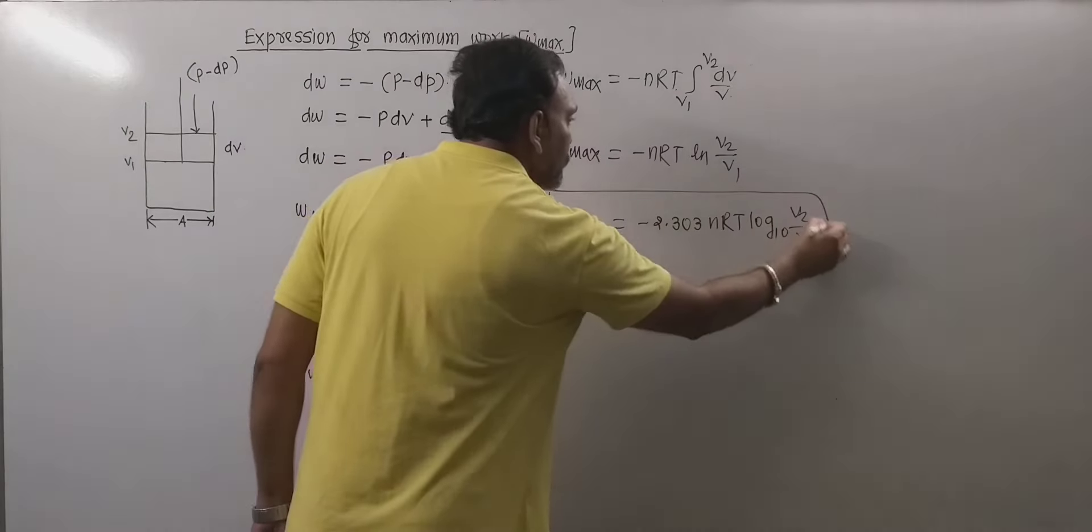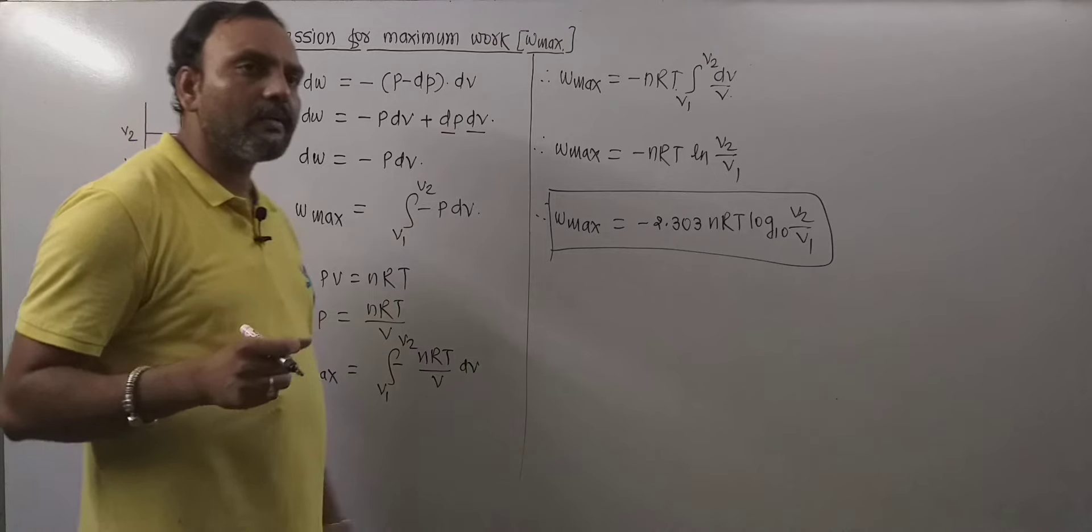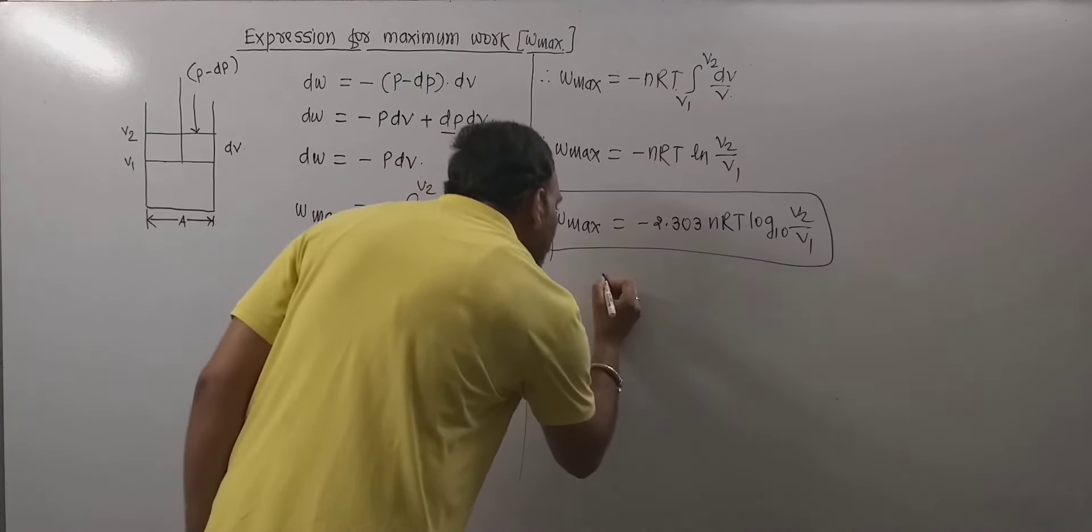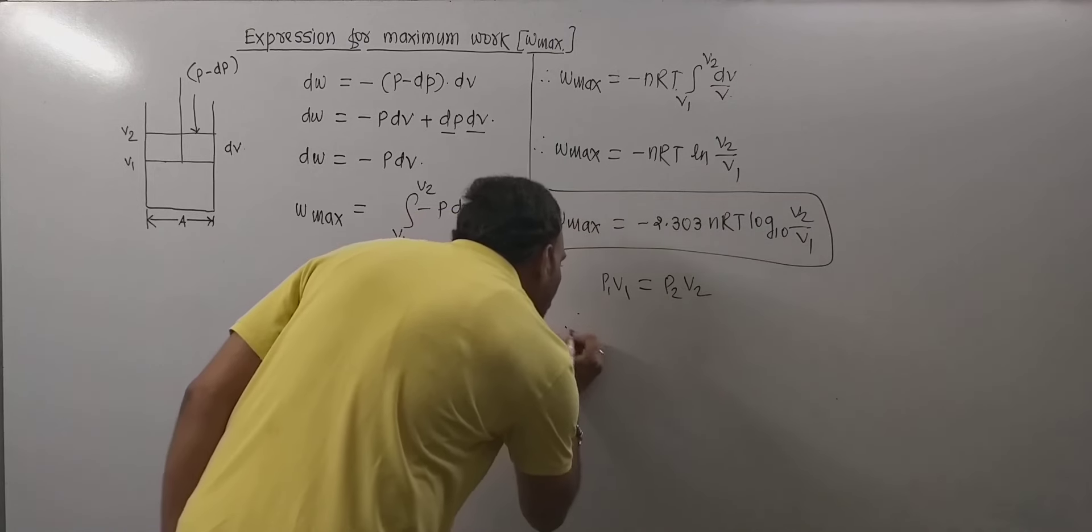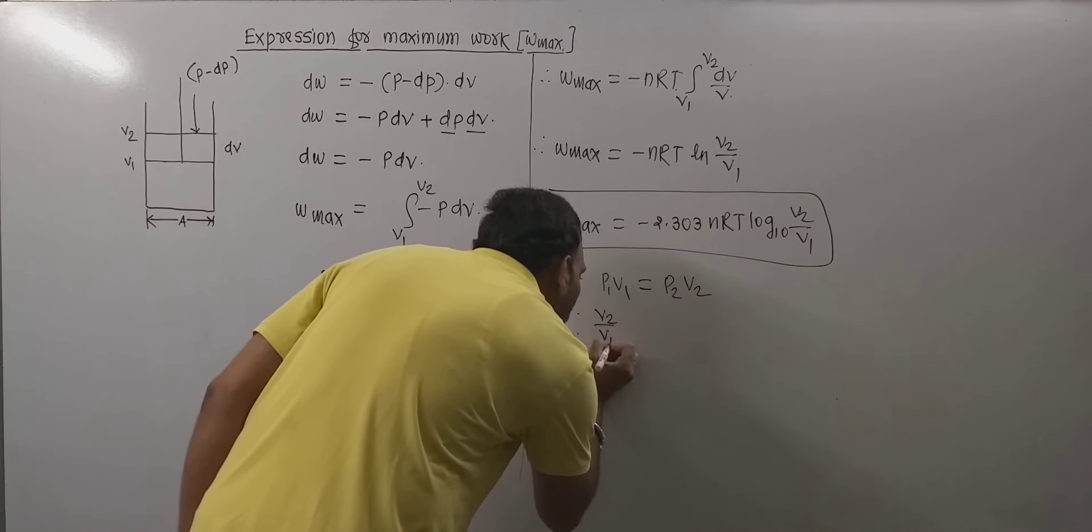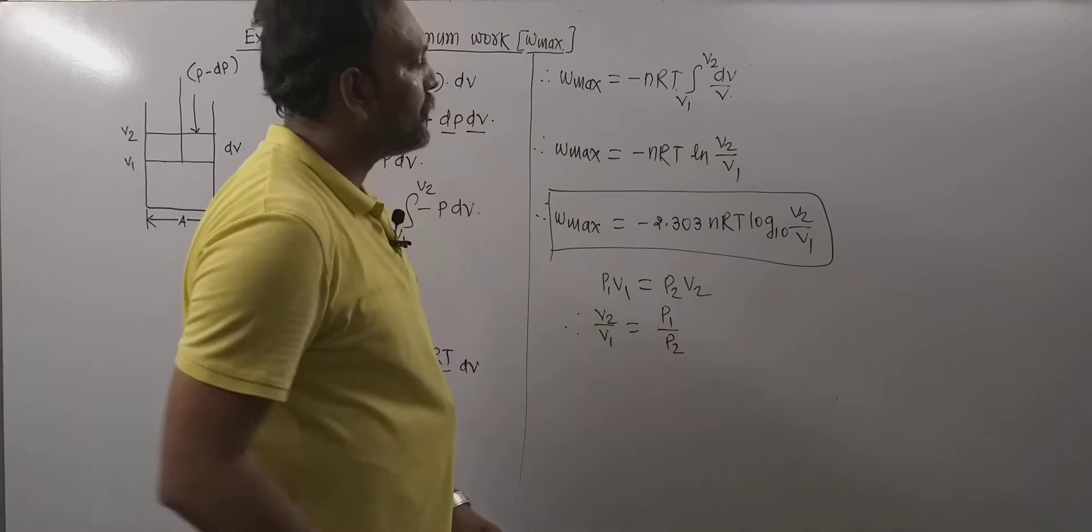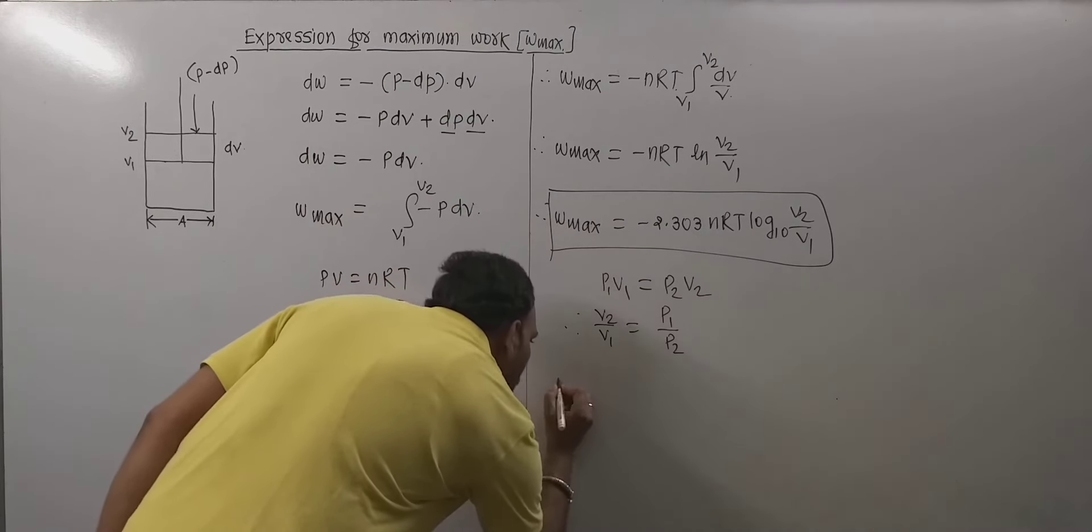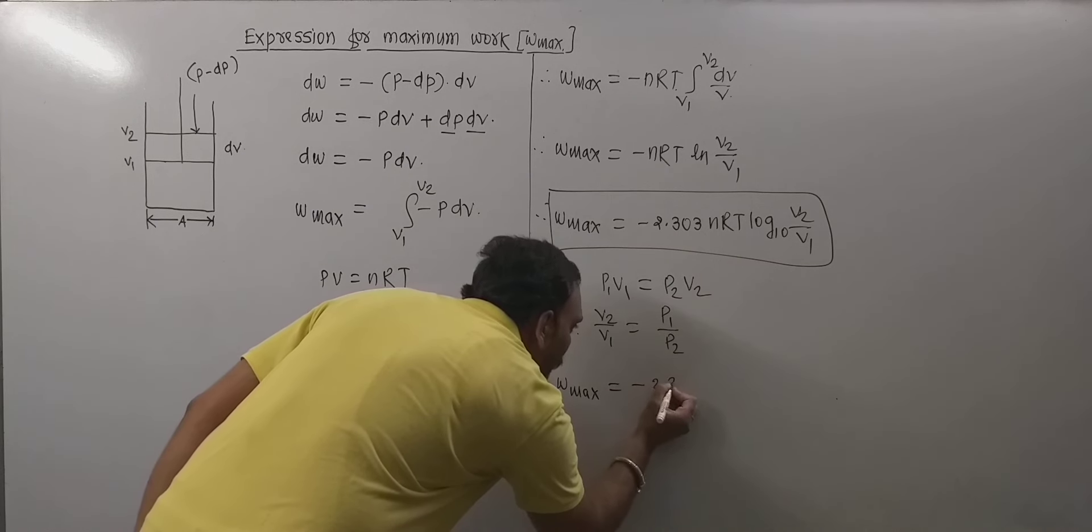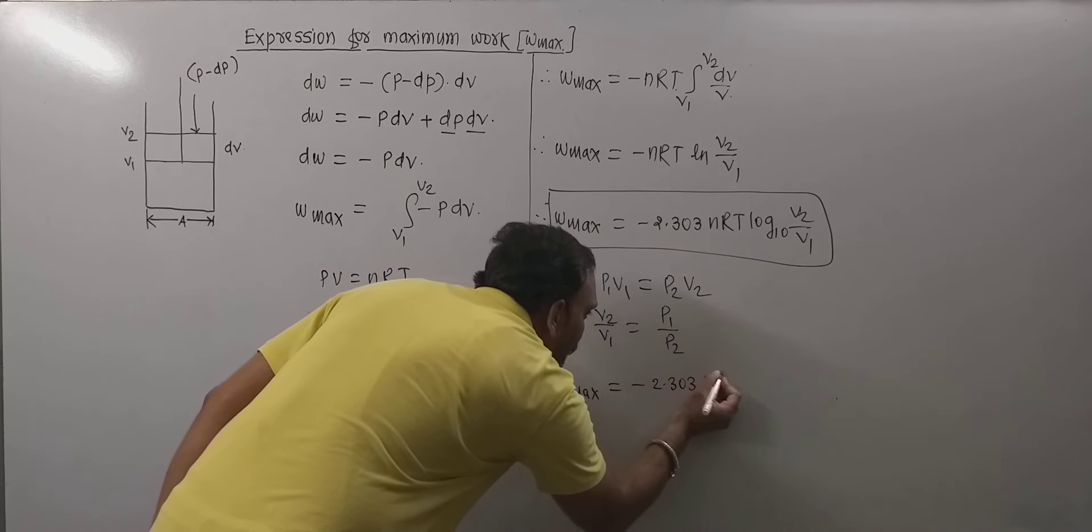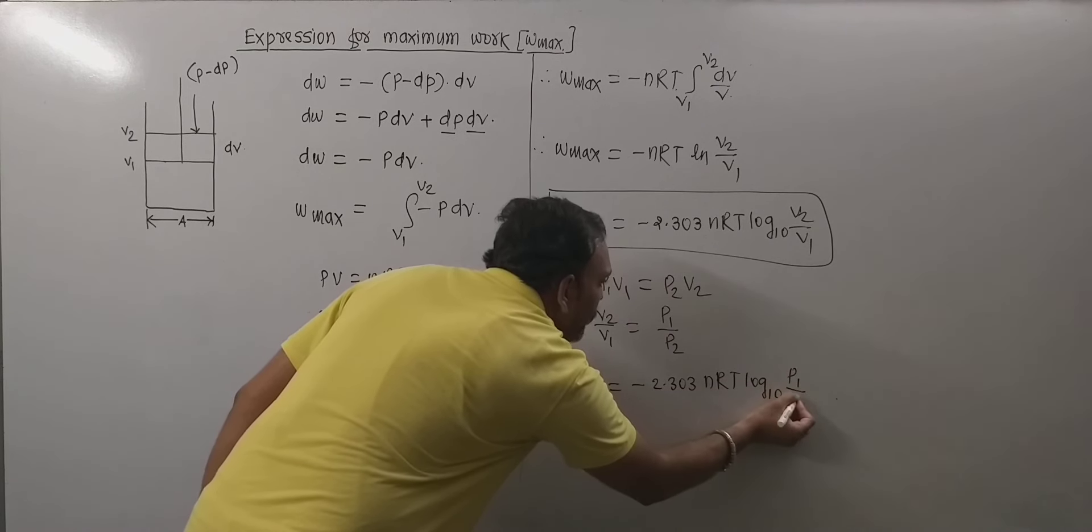So this is the expression for w_max. At constant temperature, we know according to Boyle's law p1·v1 equals p2·v2. Thus v2 by v1 equals p1 by p2. Hence this equation also becomes w_max, that is maximum work, equals minus 2.303 nRT log base 10 (p1/p2).